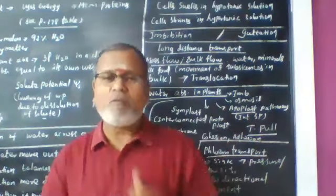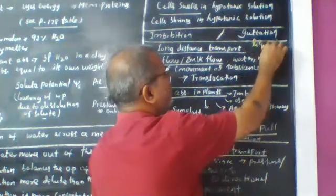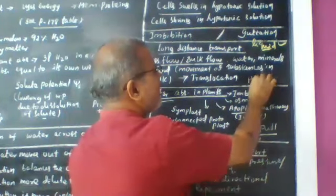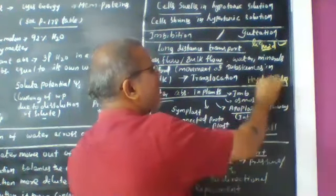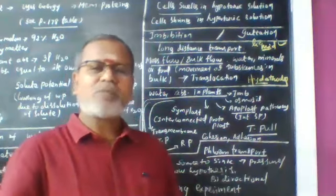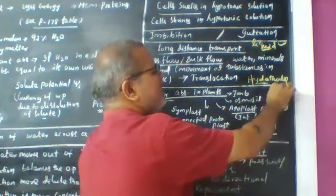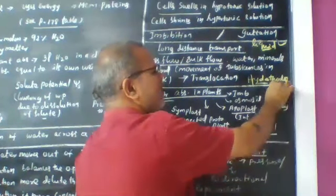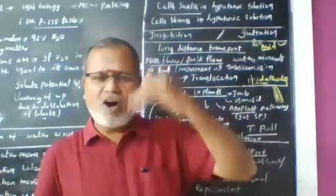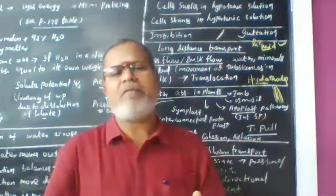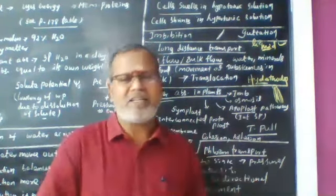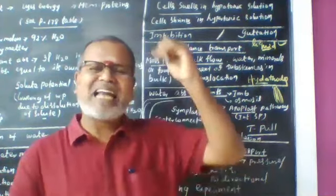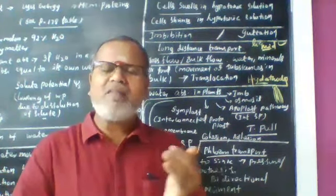Guttation is an exceptional case where loss of water occurs in liquid form through hydatodes or water stomata. Hydatodes are minute pores or openings present at the tip of the leaf, along the veins and veinlets. Unlike transpiration, guttation involves liquid water loss.